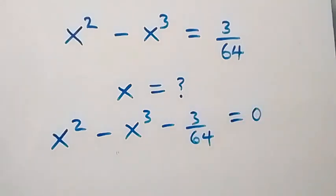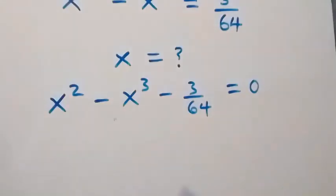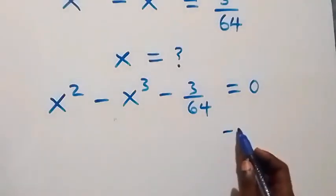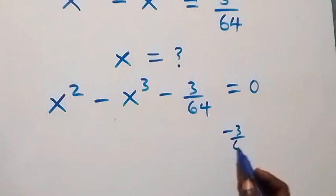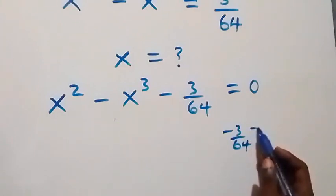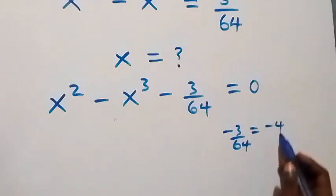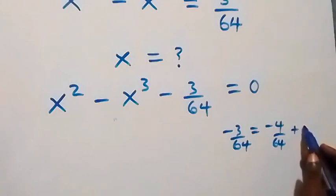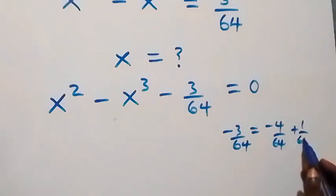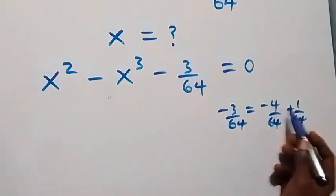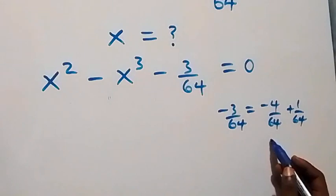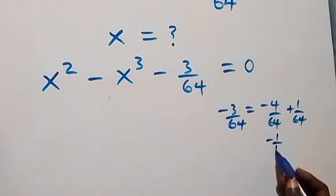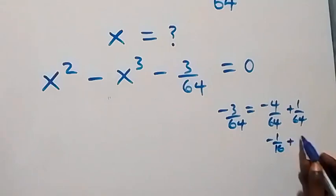From here we can rewrite minus 3 over 64 as minus 4 over 64 plus 1 over 64, and reducing, that gives us minus 1 over 16 plus 1 over 64.